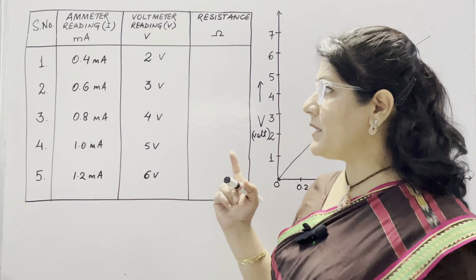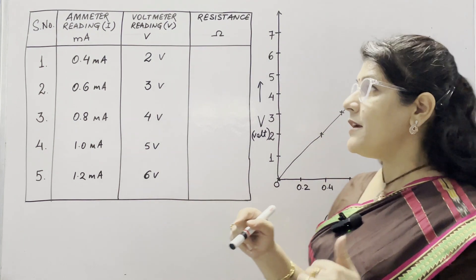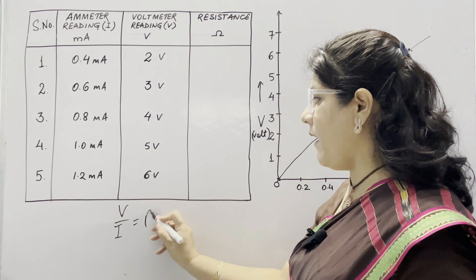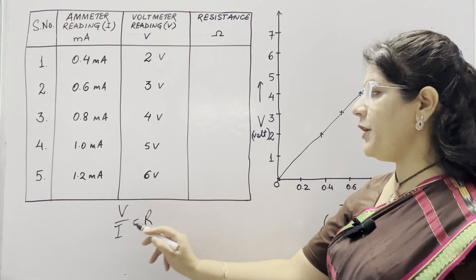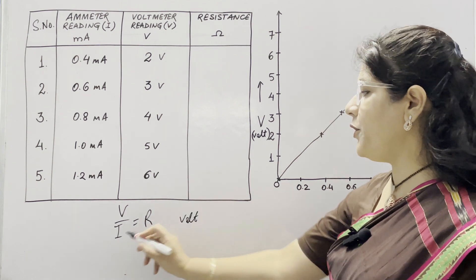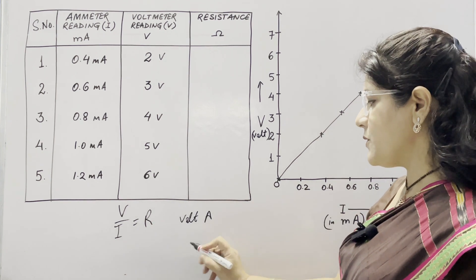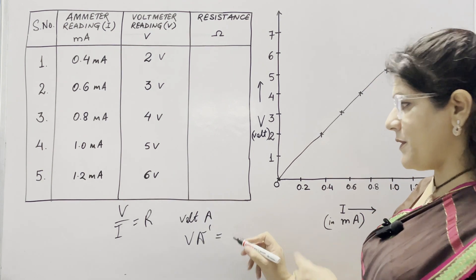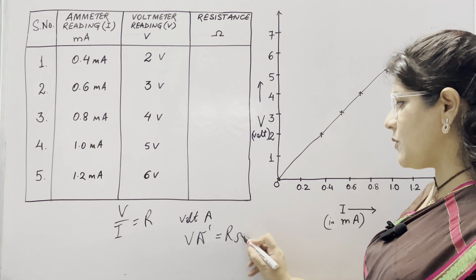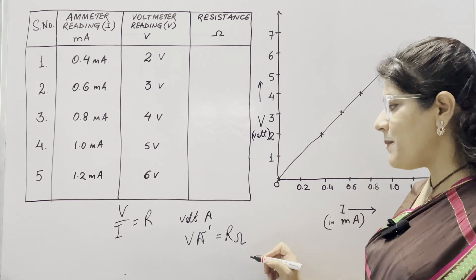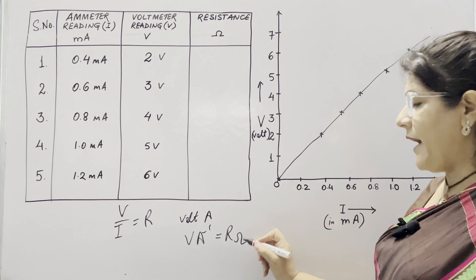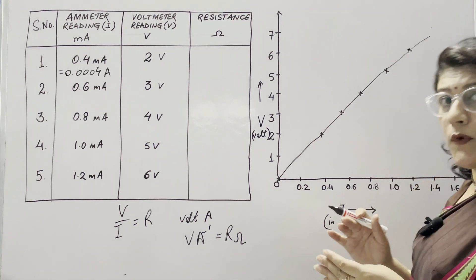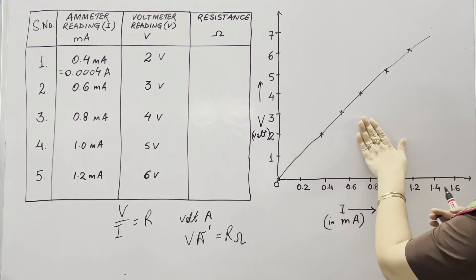When we plot V upon I, it is a constant, and if this constant is given the value R, the unit of potential difference is volt and unit of current is ampere. So volt per ampere is known as the unit of resistance, and this unit is the Ohm, in honor of German scientist George Simon Ohm. The reciprocal of resistance is known as conductance.